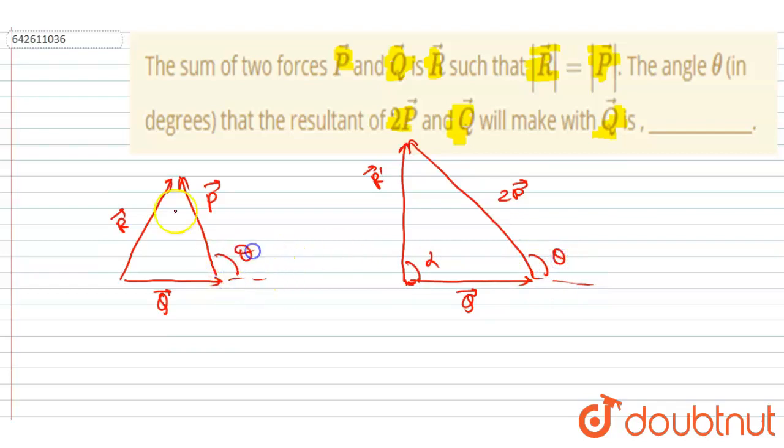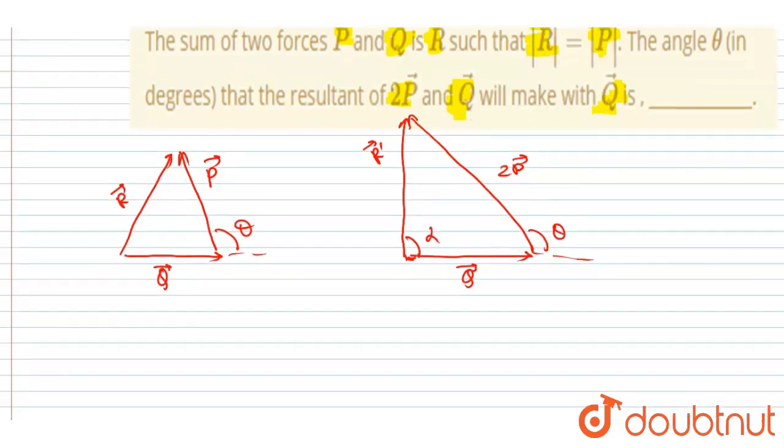Theta and theta. Very simple. Now it is given that the magnitude of R and P is same. So I will write the magnitude of R is equal to square root of P squared plus Q squared plus 2PQ cos theta.